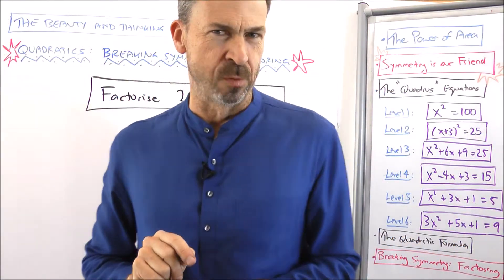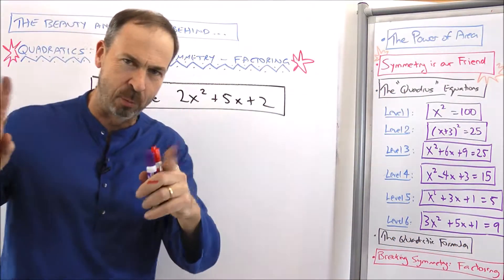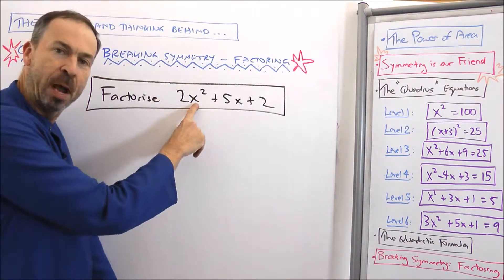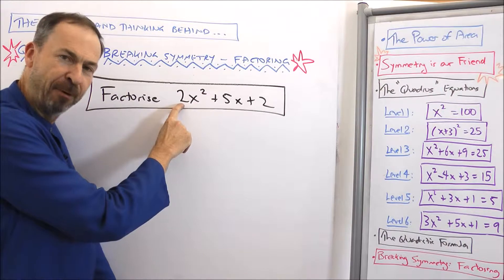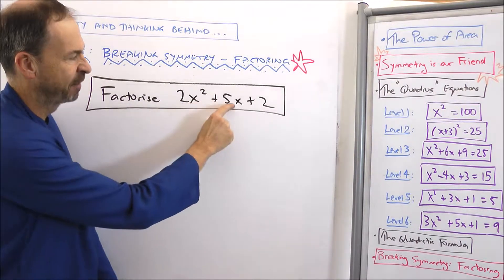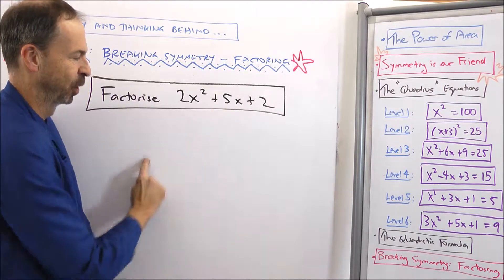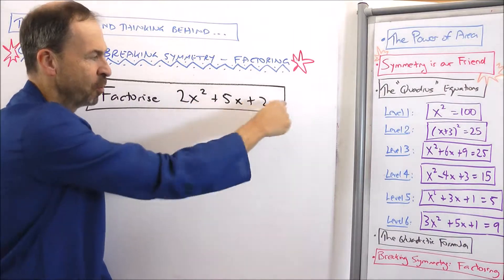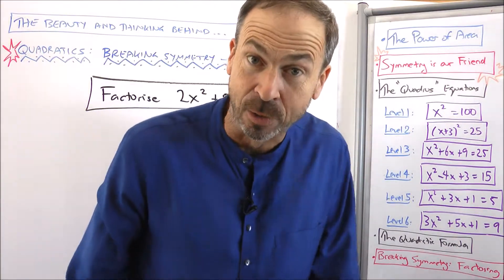All right, there's one thing I've been avoiding all this time. I've made all my examples where we're making these unsymmetrical rectangles have just a single x squared in front. But what if there's a number in front of the x squared, like 2x squared? Could I write 2x² + 5x + 2 as some sort of unsymmetrical rectangle?